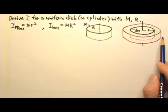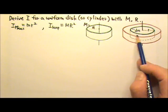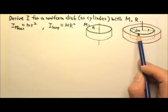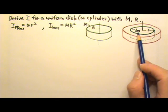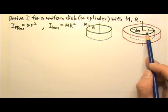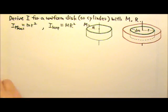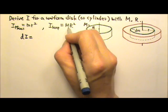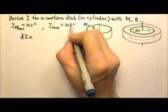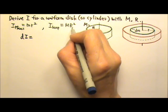We should chop the disc into extremely thin layers of hoops. For example, this thin layer of hoop has a mass dm and the radius r, and it has a rotational inertia of dI that equals the mass of the hoop times the radius of the hoop squared.